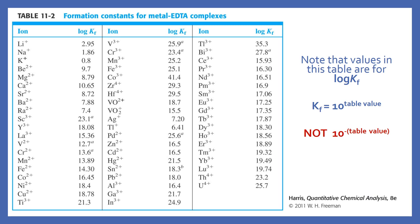Here's a table showing the log of the Kf values, since Kf values can span a large range. To get Kf, take the antilog — 10 to the power of the value in the table. This is not a p-Kf table; it's simply log of Kf. For example, for neodymium 3+, Kf equals 10 to the power of 16.51.